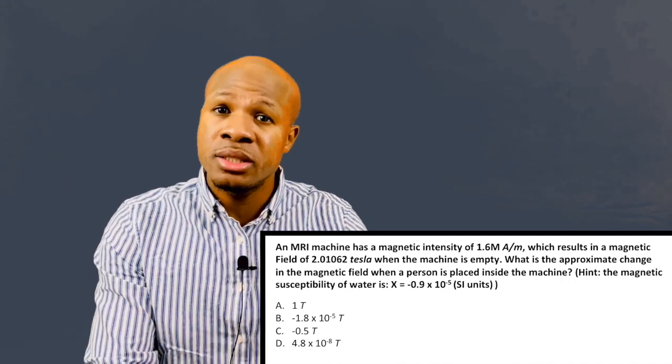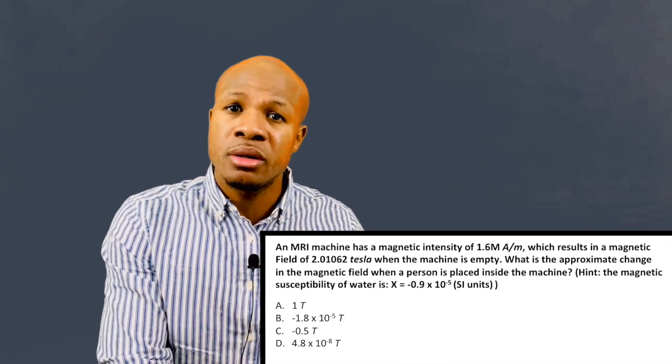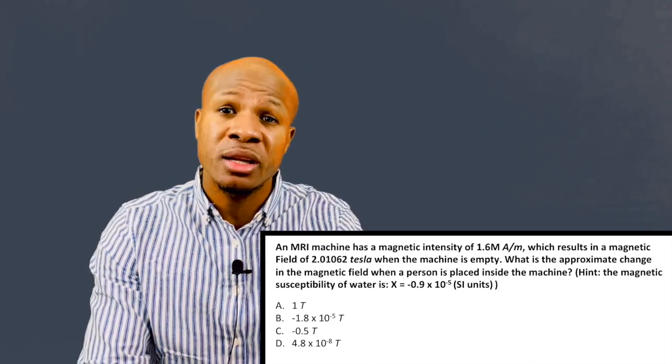So to get the magnetic field within the machine when a body is placed is going to be equal to 4 pi times 10 to the negative 7 times 1 minus 0.9 times 10 to the negative 5, which would be the magnetic susceptibility times the magnetic intensity of 1.6 million. And then we're going to subtract away 2.01062, which was the initial magnetic field within the machine when it was just a vacuum. And what is the difference? When we plug this into our calculator, we get a difference of negative 1.8 times 10 to the negative 5 tesla.